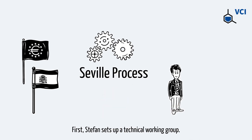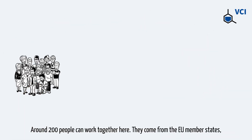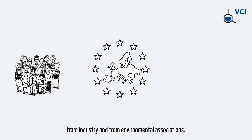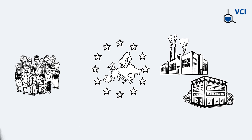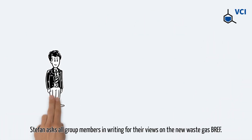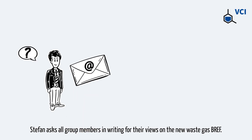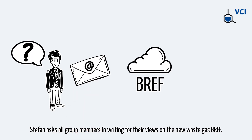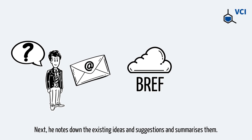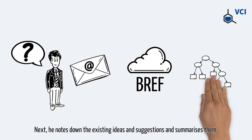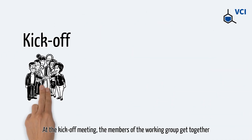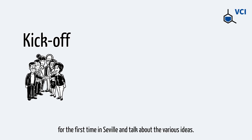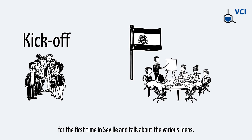First, Stefan sets up a technical working group. Around 200 people can work together here. They come from the EU member states, from industry and from environmental associations. Stefan asks all group members in writing for their views on the new waste gas BRAF. Next he notes down the existing ideas and suggestions and summarizes them. At the kickoff meeting, the members of the working group get together for the first time in Seville and talk about the various ideas.